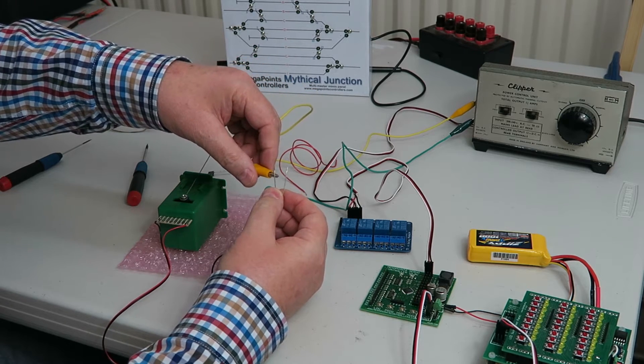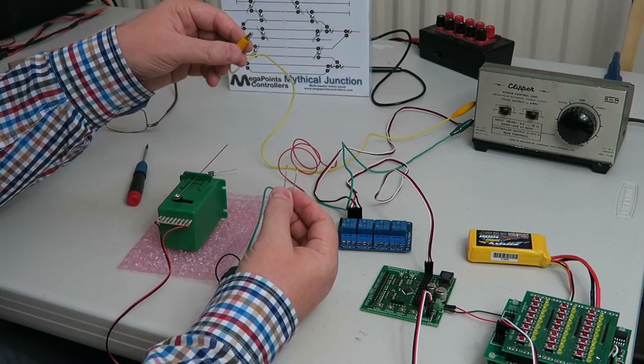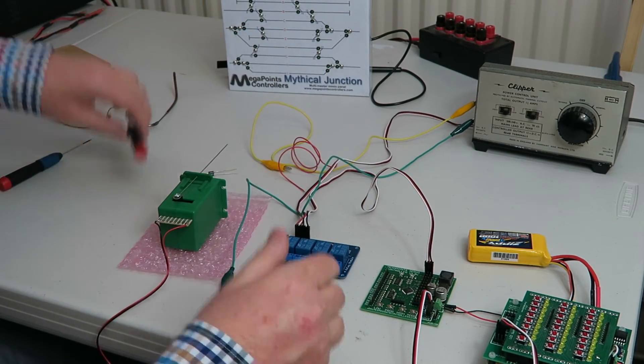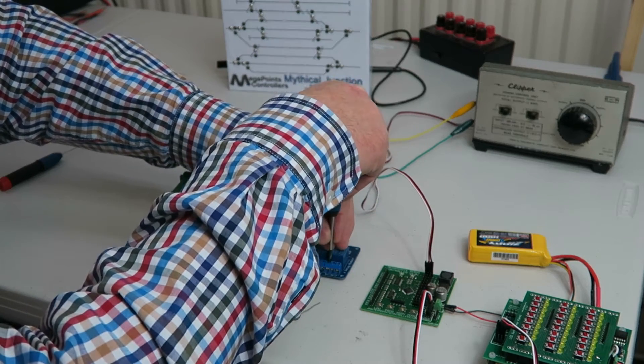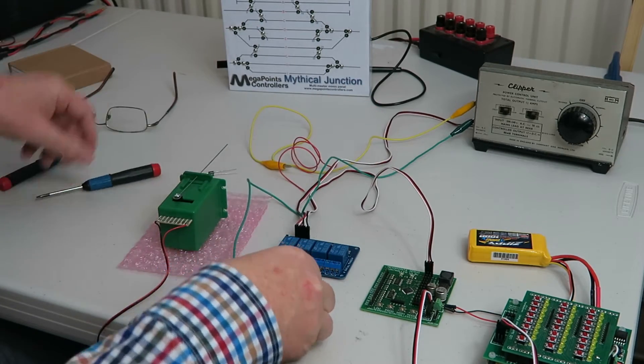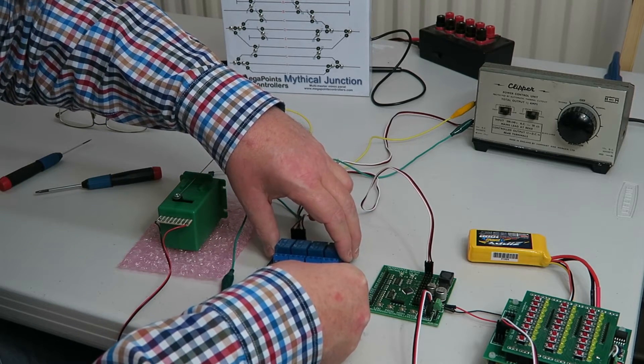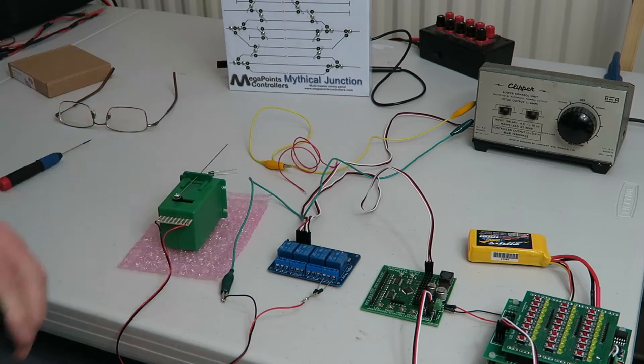So using this we can attach it to our relay board. I have a relay board here so what I'll do is clear up the terminals. Plug in the diodes to the outer connectors on the relay.